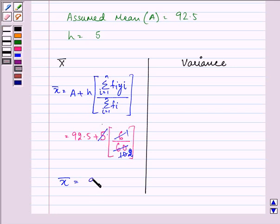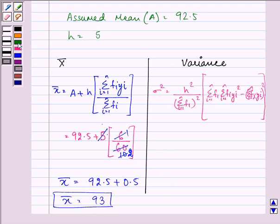So it is 92.5 plus 0.5 giving us 93 as mean. Now we need to calculate variance and now substituting we have 5 the whole square upon 60 the whole square into 60 into 254 minus 6 the whole square.